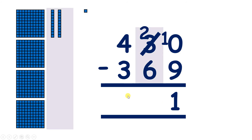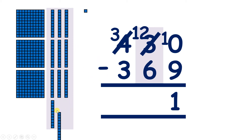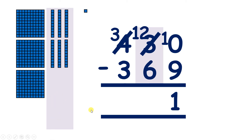Now we can move on to our tens. We can't subtract 6 from 2, so we need to exchange one of our hundreds for 10 more tens. So now we don't have 4 hundreds — we have 3 hundreds — and we can put a 1 in front of our 2, because we now have 12 tens. With 12 tens, we can take away 1, 2, 3, 4, 5, 6, and that leaves us with 6 tens.